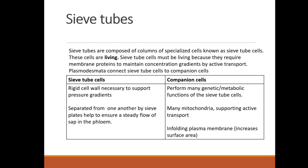Sieve tube cells are living, and they must be living because they require membrane proteins to maintain active transport. Plasmodesmata connect the sieve tubes to companion cells — this is where things move across cells. The companion cells perform many metabolic functions, support active transport, and contain plasma membrane. Sieve tube cells have rigid cell walls needed for support, and they are separated from one another by sieve plates, which allows for steady flow of sap in the phloem.